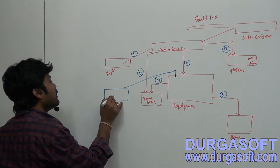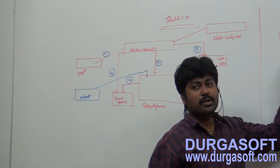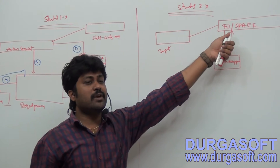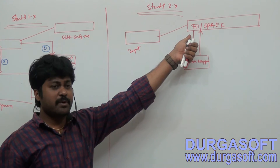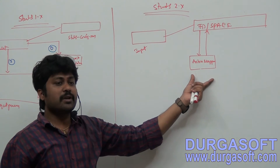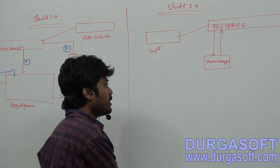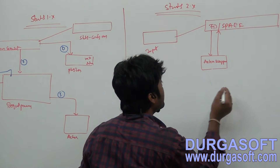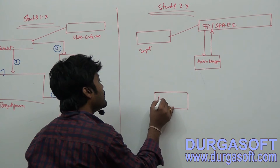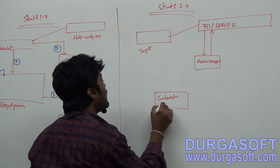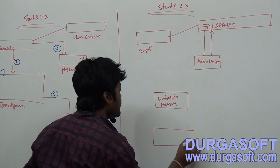Coming to Struts 2x architecture, whenever you submit your input request, the request first goes to FilterDispatcher or StrutsPrepareAndExecuteFilter. This filter will forward your request to the ActionMapper class. ActionMapper, by using ConfigurationManager class, reads the configuration data.